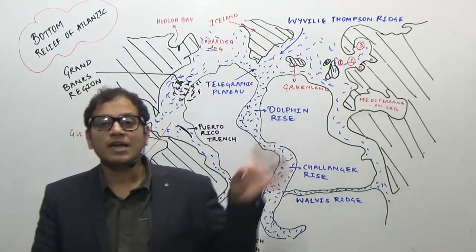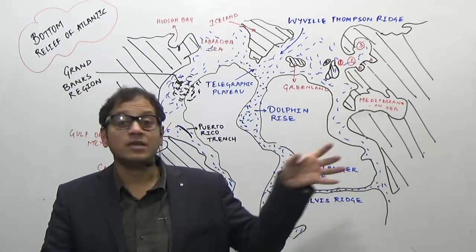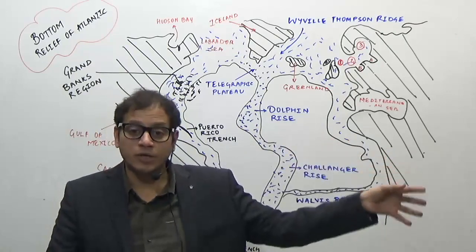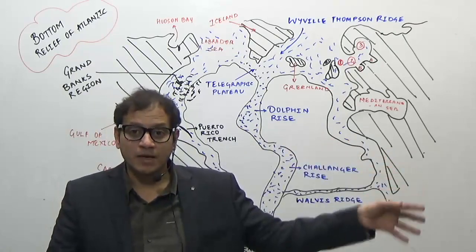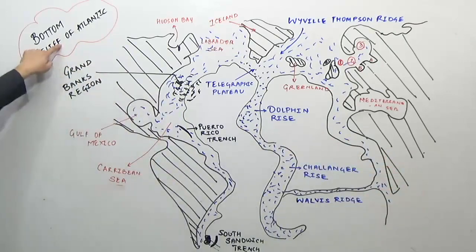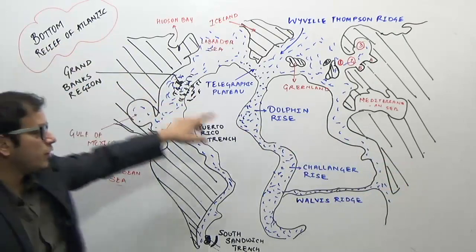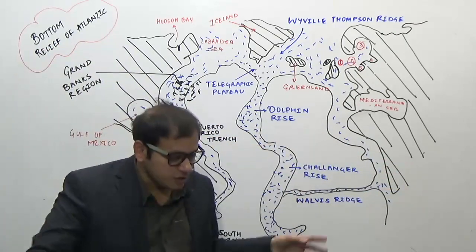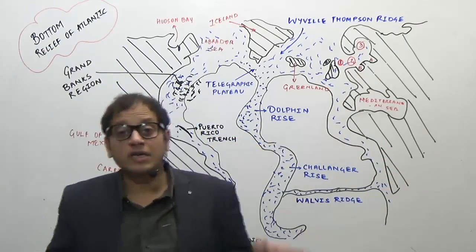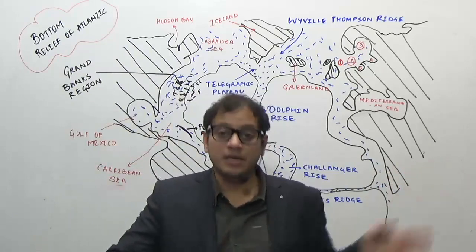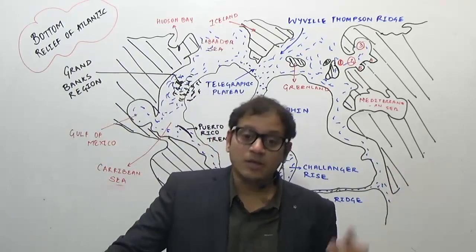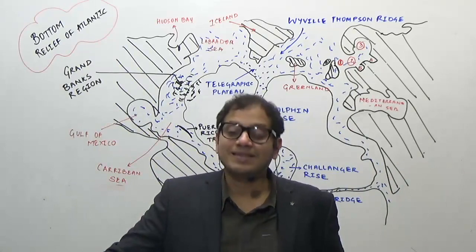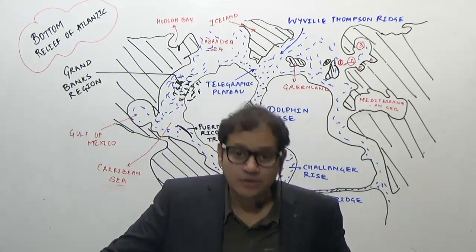A question can come asking: in which ocean is the Dolphin Ridge or Dolphin Rise located? Now we are studying the bottom relief of the Atlantic Ocean, so you know the Dolphin Rise is located in the Atlantic Ocean. Other possible questions include: what is the importance of the Grand Banks region, and where is the Challenger Rise located?